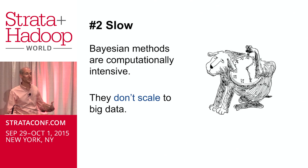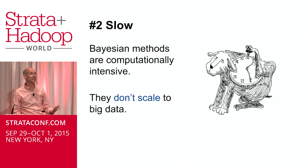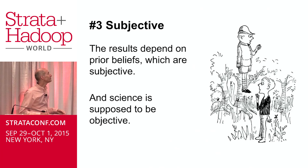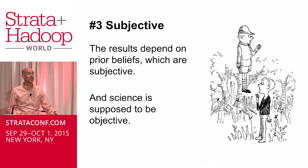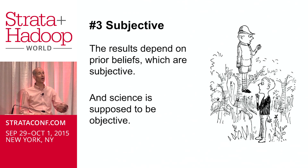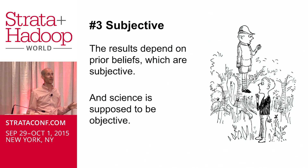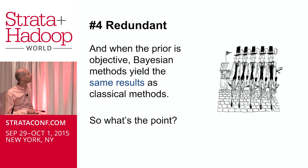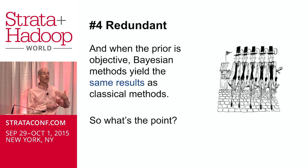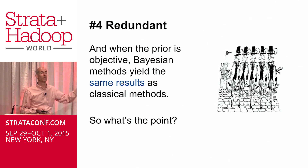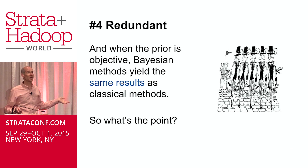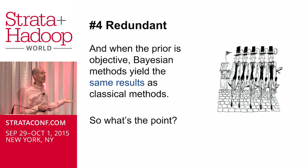As we've heard a couple of times today, Bayesian methods tend to be computationally intensive, so maybe they don't scale up to big data. And the results that you get are all dependent on your prior beliefs, so they're subjective. If you're doing objective science, then maybe that's not acceptable. And even if the priors are objective, the results you get at the end are pretty much the same as what you get from frequentist stats — so why bother?